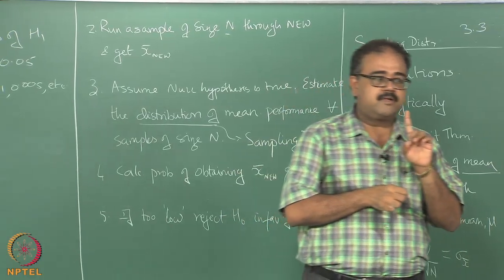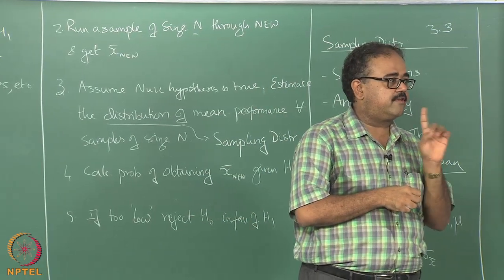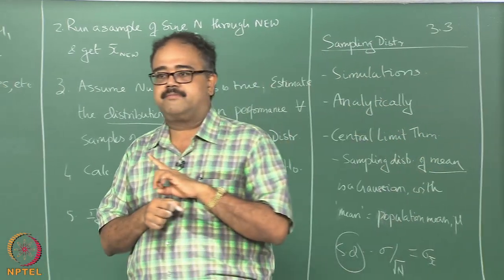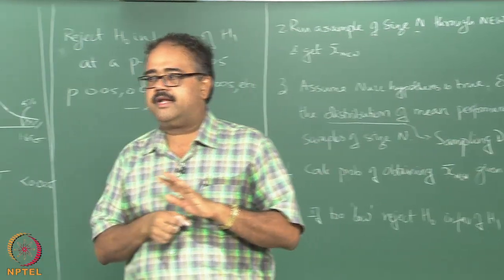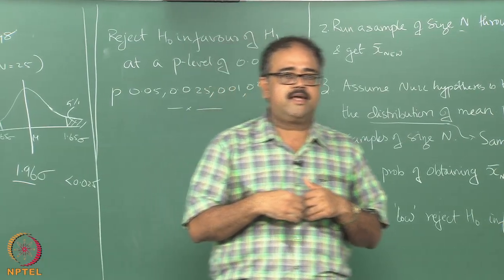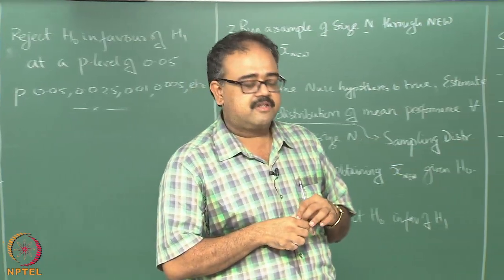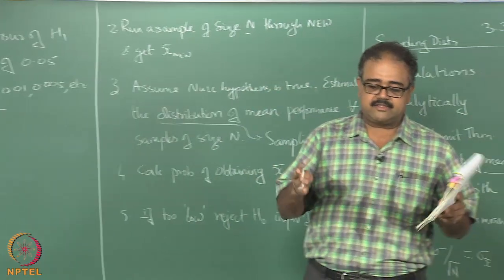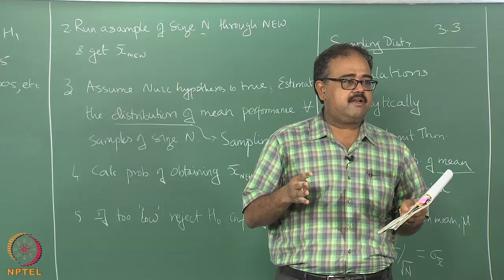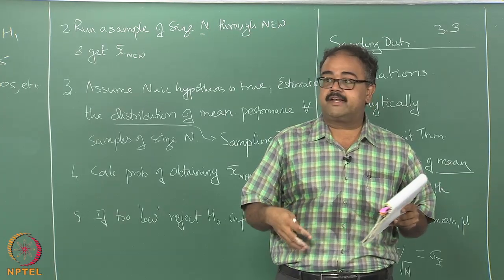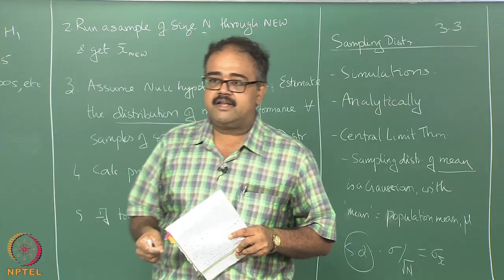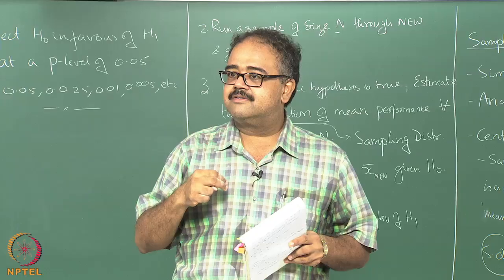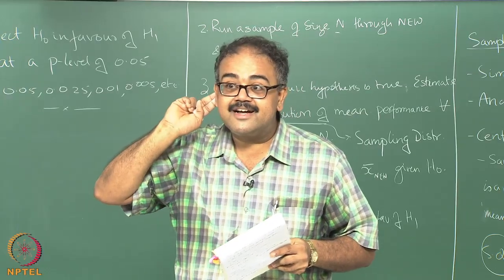Something important to mention: in all of the things being discussed today, the assumption is that the means are different and we are testing for the difference in means, but we are assuming that the standard deviation is the same across the new and the old. That is why we can estimate the standard deviation on the new data and still use it as the population standard deviation — we are assuming only that the means are different. There is a whole class of statistical tests you can run if you assume the variances are also significantly different, and these broadly fall under the class of algorithms known as ANOVA.